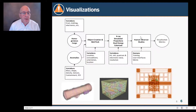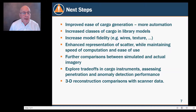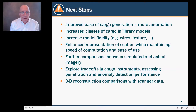The present work is to extend this into a visualization study. The bottom line is to be able to see different types of IEDs and explosives at different kVs, MAs, and in different types of cargo — this is ongoing work. The next steps include improving the ease of cargo generation with more automation, increasing the number of objects in our library, increasing model fidelity including wires and texture, enhancing representation of scatter while maintaining speed and ease of use, further comparisons between simulated and actual imagery, and exploring trade-offs in cargo instruments assessing penetration and anomaly detection.